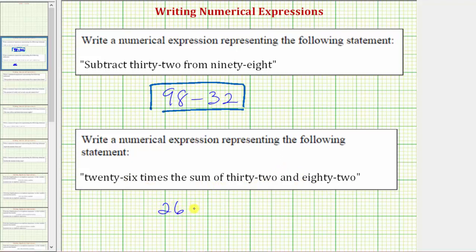So we have 26 times in parentheses the sum of 32 and 82, and sum means addition. So in the parentheses we have 32 plus 82. This is the expression for 26 times the sum of 32 and 82.